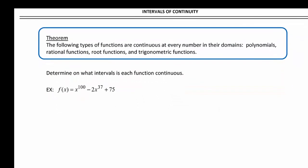We have a theorem that states the following types of functions are continuous at every number in their domains: polynomials, rational functions, root functions, and trigonometric functions. So as long as it's in the domain, we know it's continuous and we know how to find the domains of all of those types of functions.